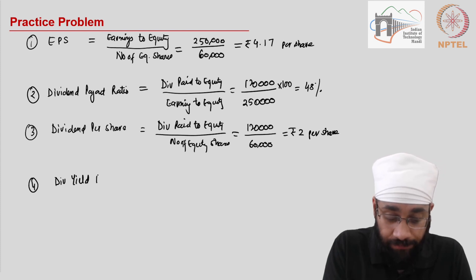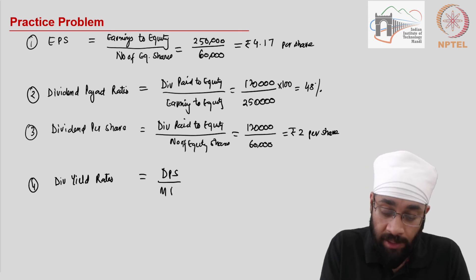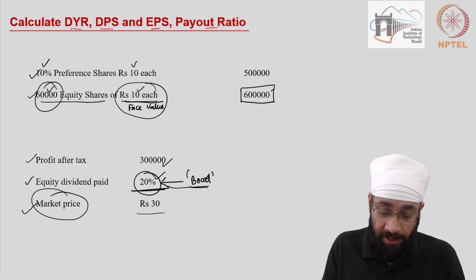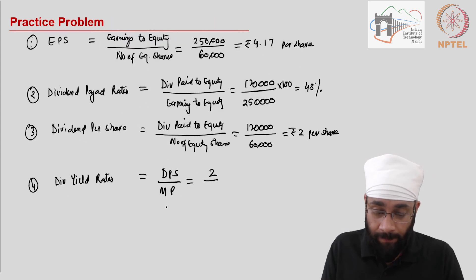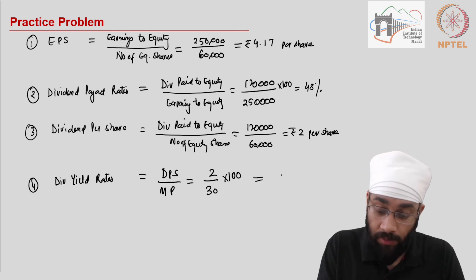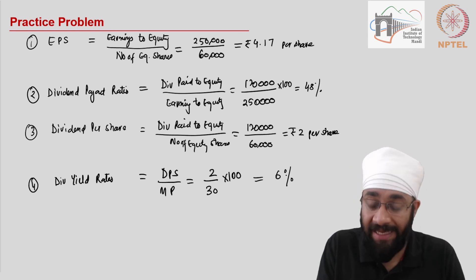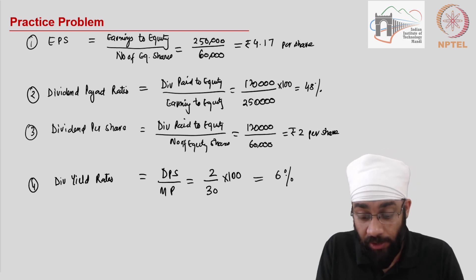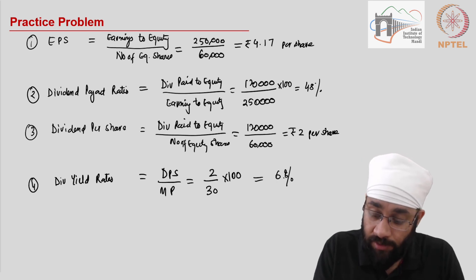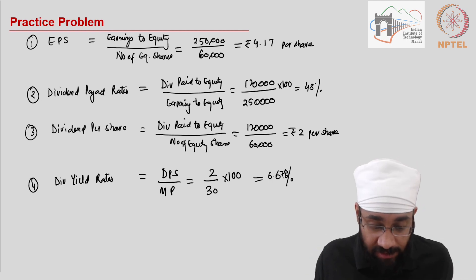Finally, dividend yield ratio equals dividend per share divided by market price of the share. Dividend per share is rupees 2, and market price is rupees 30. So 2 divided by 30 multiplied by 100 gives approximately 6.67%. This is the return you would make on your investment in this share.